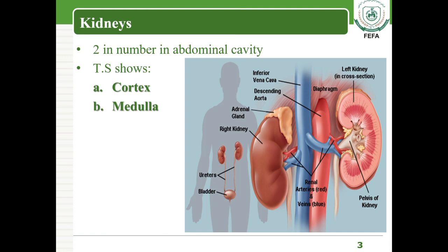The area where the renal artery, renal vein, and ureter enter or leave the kidney is known as the hilum.